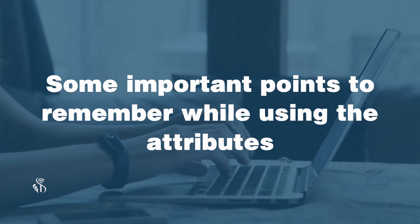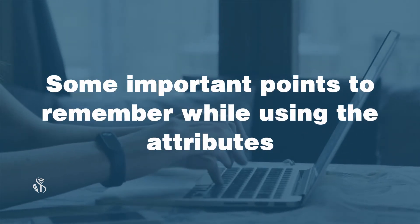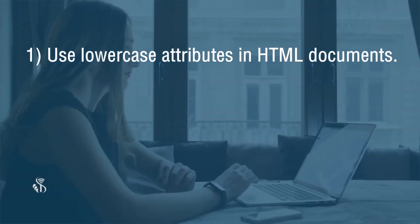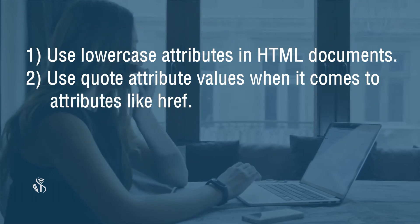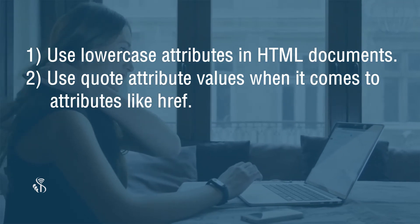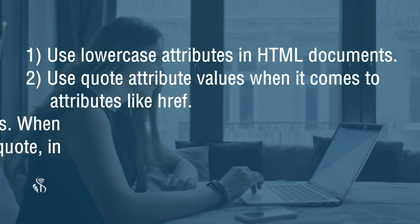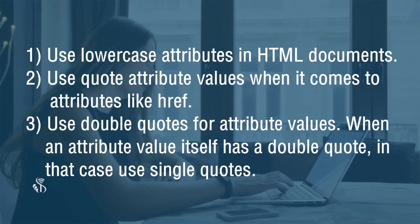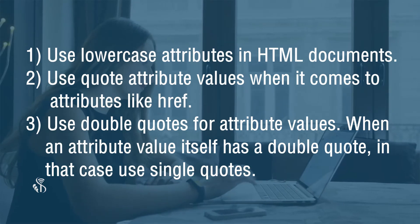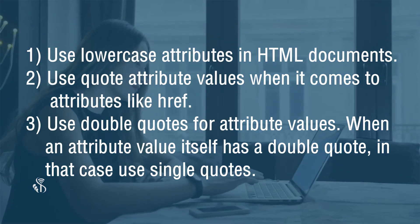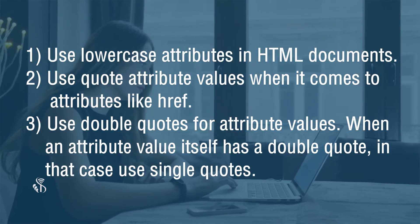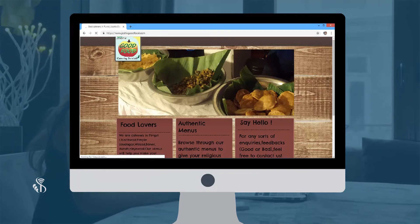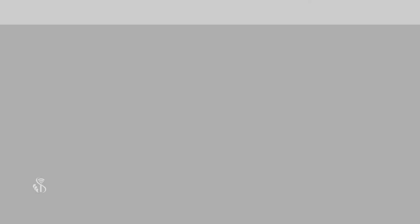Some important points to remember while using attributes: 1. Use lowercase attributes in HTML documents. 2. Use quoted attribute values, especially for attributes like href. 3. Use double quotes for attribute values. When an attribute value itself contains a double quote, use single quotes instead. Now let us see the example of our Joshi Caterers webpage using all of these attributes.